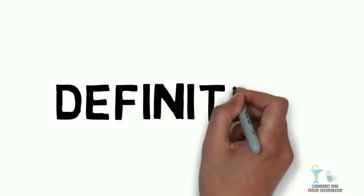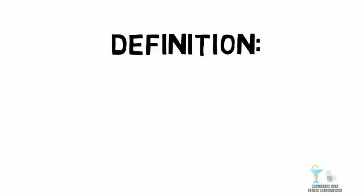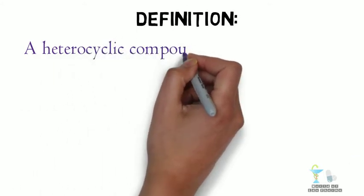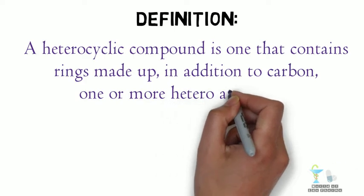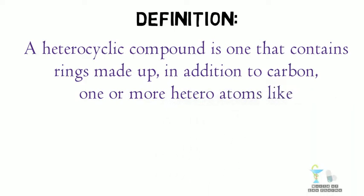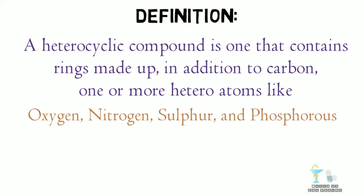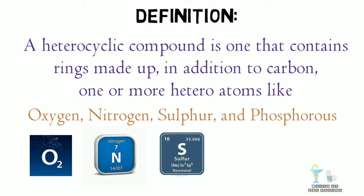Now let us see the definition of the heterocyclic compound. A heterocyclic compound is one that contains rings made up, in addition to carbon, of one or more heteroatoms like oxygen, nitrogen, sulfur, and phosphorus.